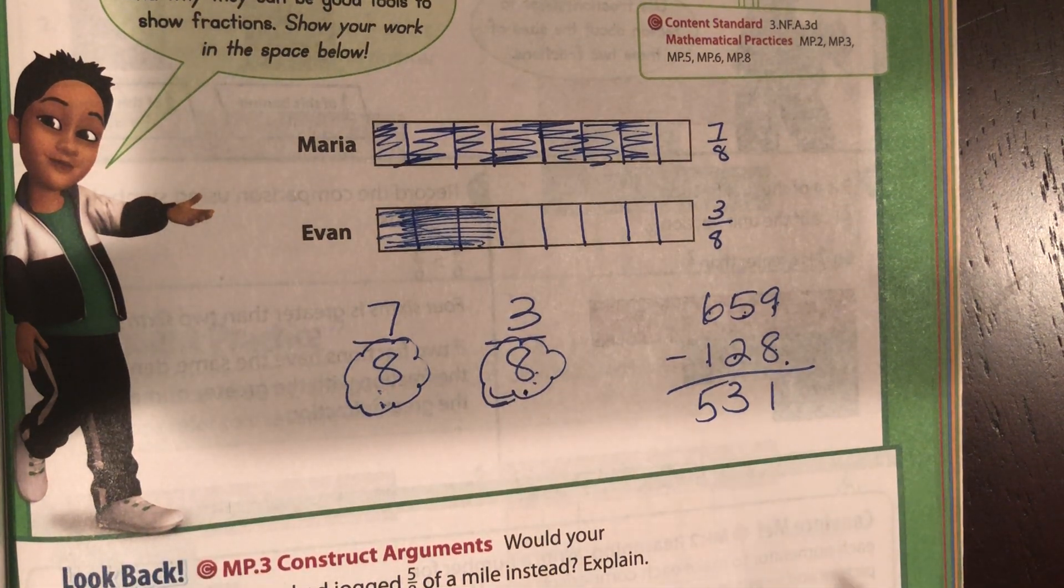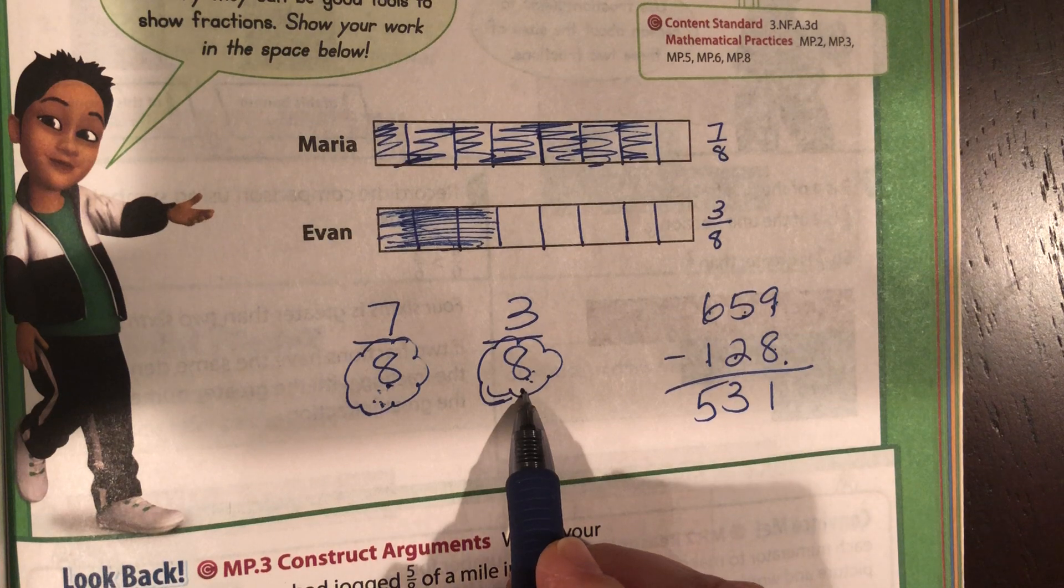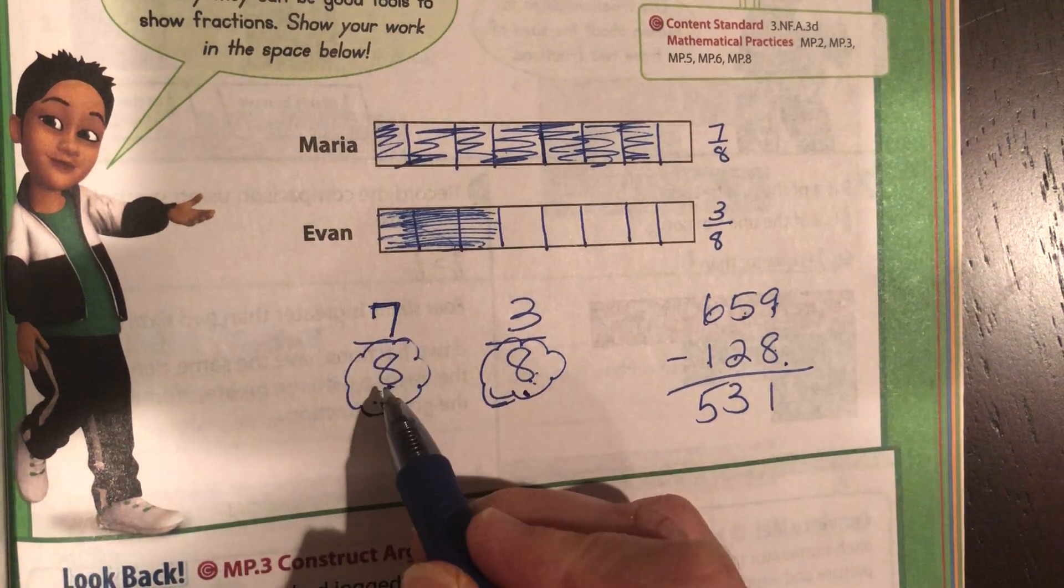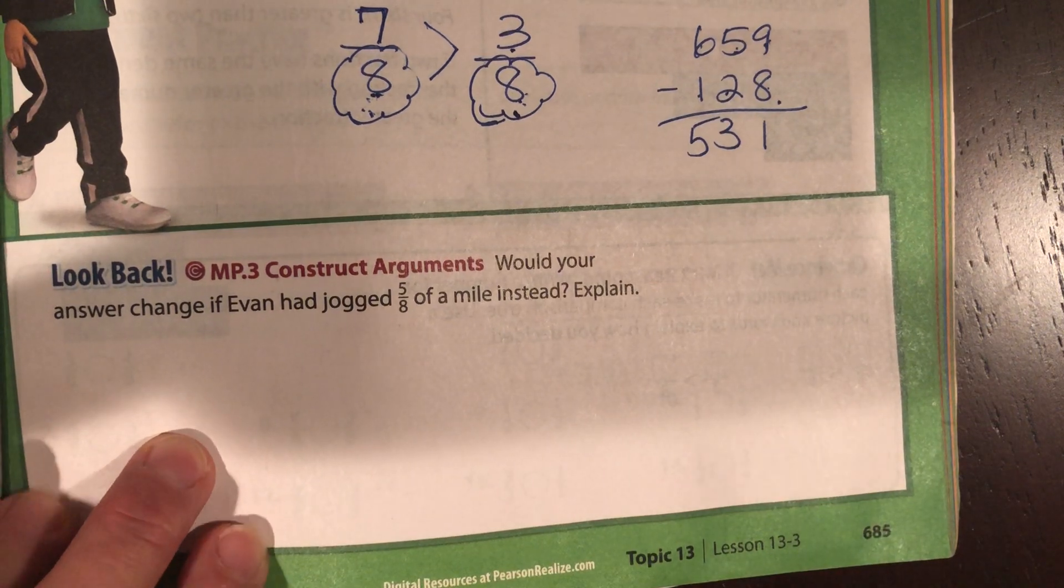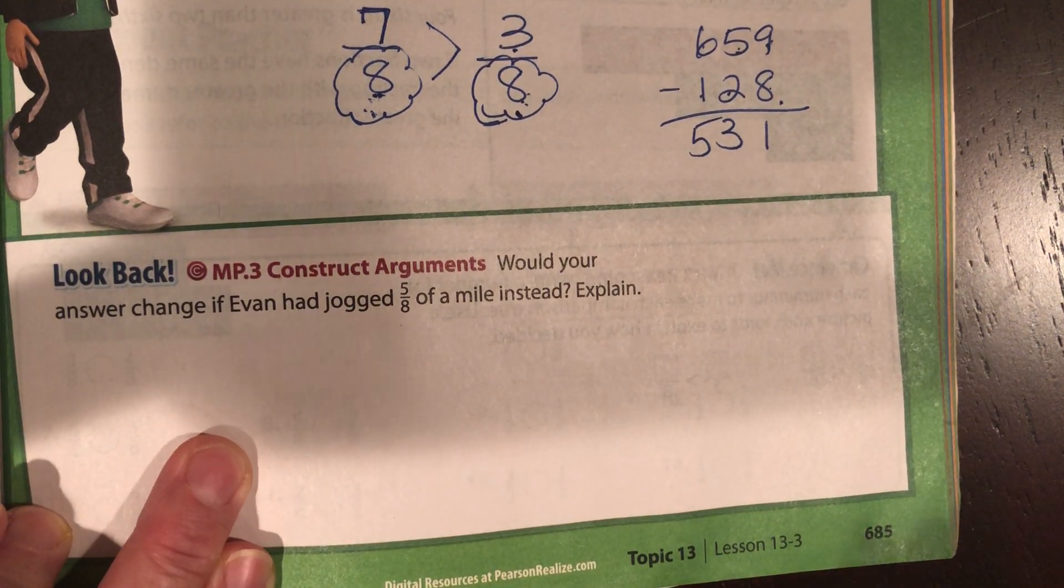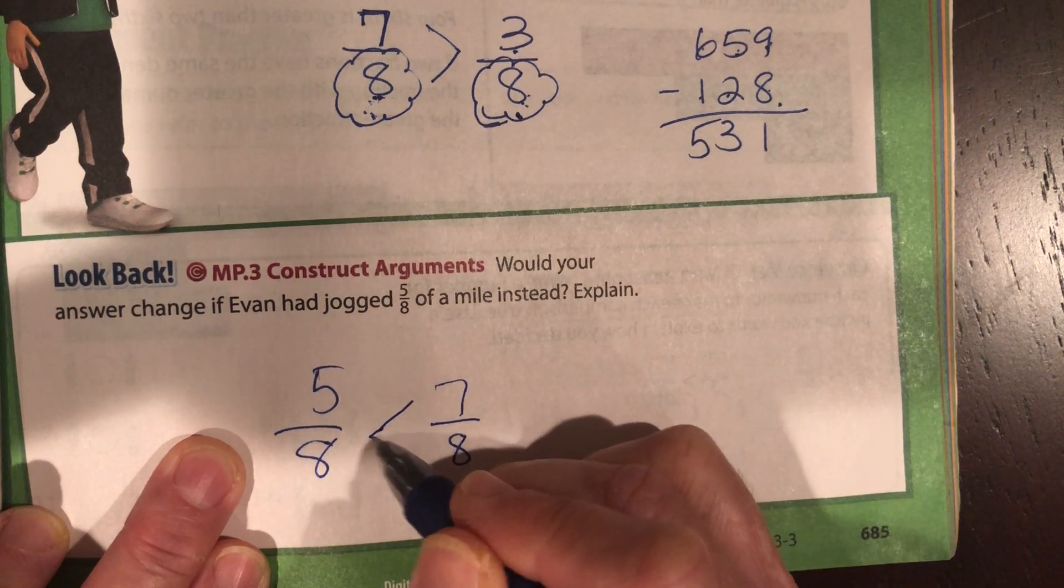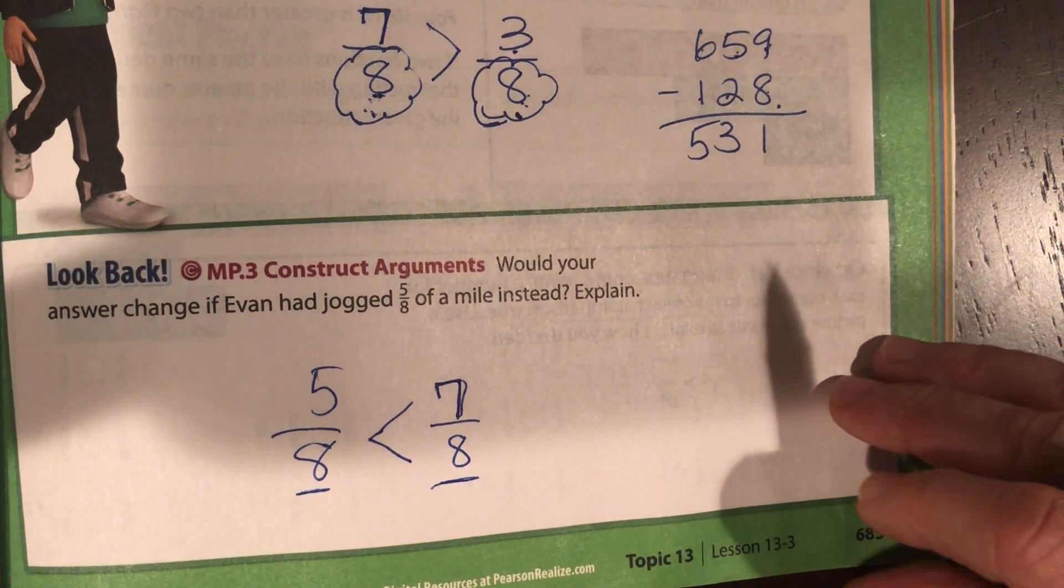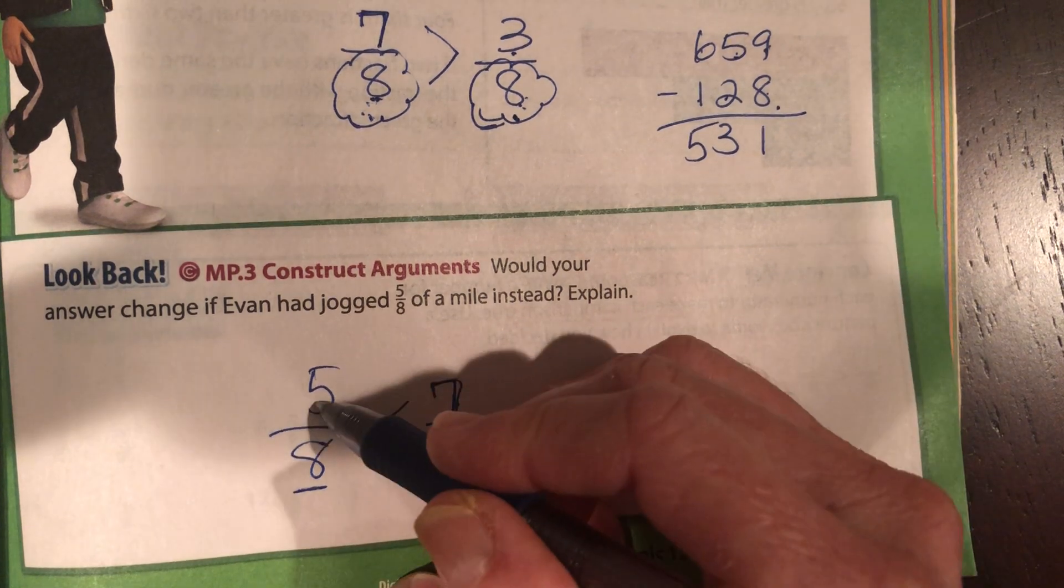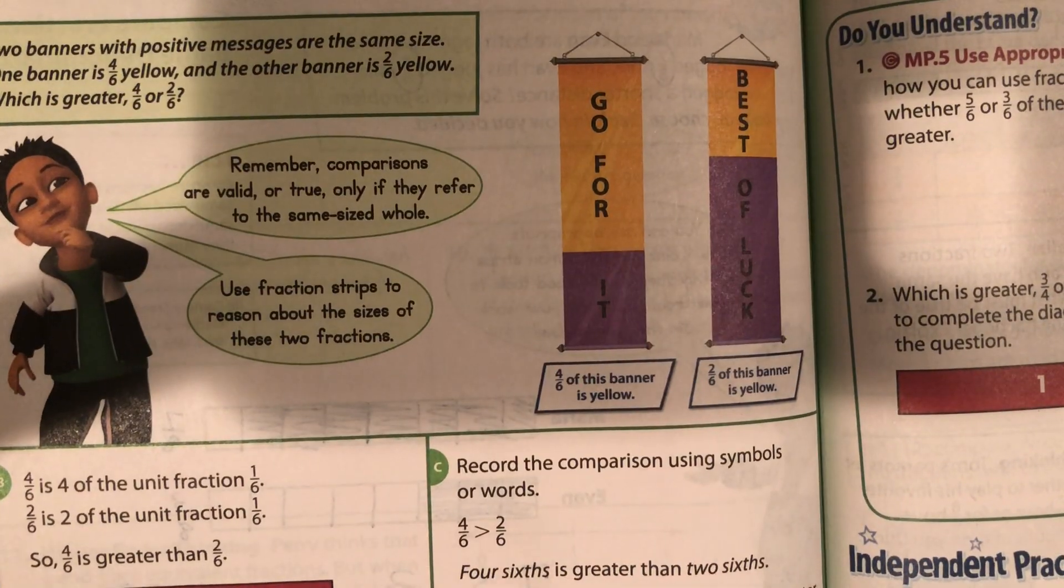Because think about it, you've divided your pizza into the same number of pieces, so every piece is the exact same size. So seven pieces, you have more than if you have three pieces. Would you change your answer if Evan had jogged five-eighths of a mile? Let's look at it. Five-eighths compared to seven-eighths. Maria still has gone further because it's seven compared to five. Easy-peasy lemon squeezy because our denominators are the same. Seven is always going to be bigger than five, assuming your denominators are the same. This lesson is fabulous because everybody's denominators are the same.